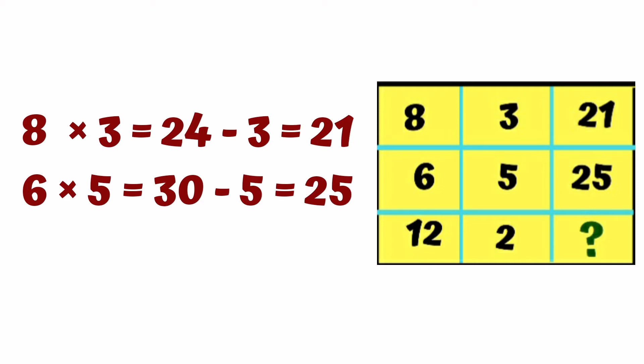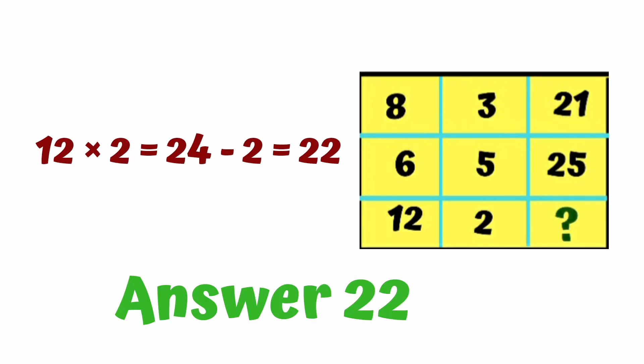That's how we solve the second row. The answer is 25. What will the final solution be? 12 times 2 is 24, 24 minus 2 is 22. Yes, friend, the answer is 22.